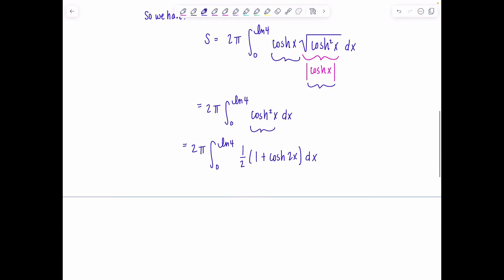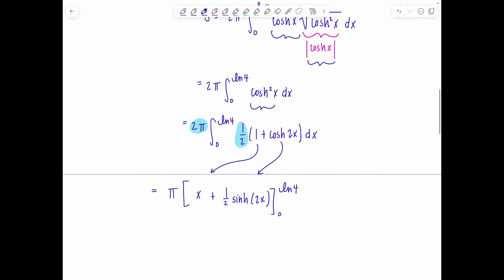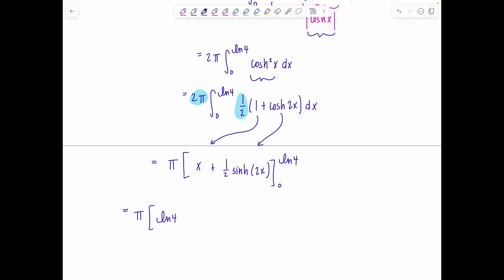From here, just go about your day and integrate. I'm going to take the one half out with the 2π. So I just have a π outside. And then now we can go term by term. Antiderivative of 1 is just x. And then antiderivative of cosh 2x would be one half sinh 2x. And this all gets evaluated from 0 to natural log of 4.